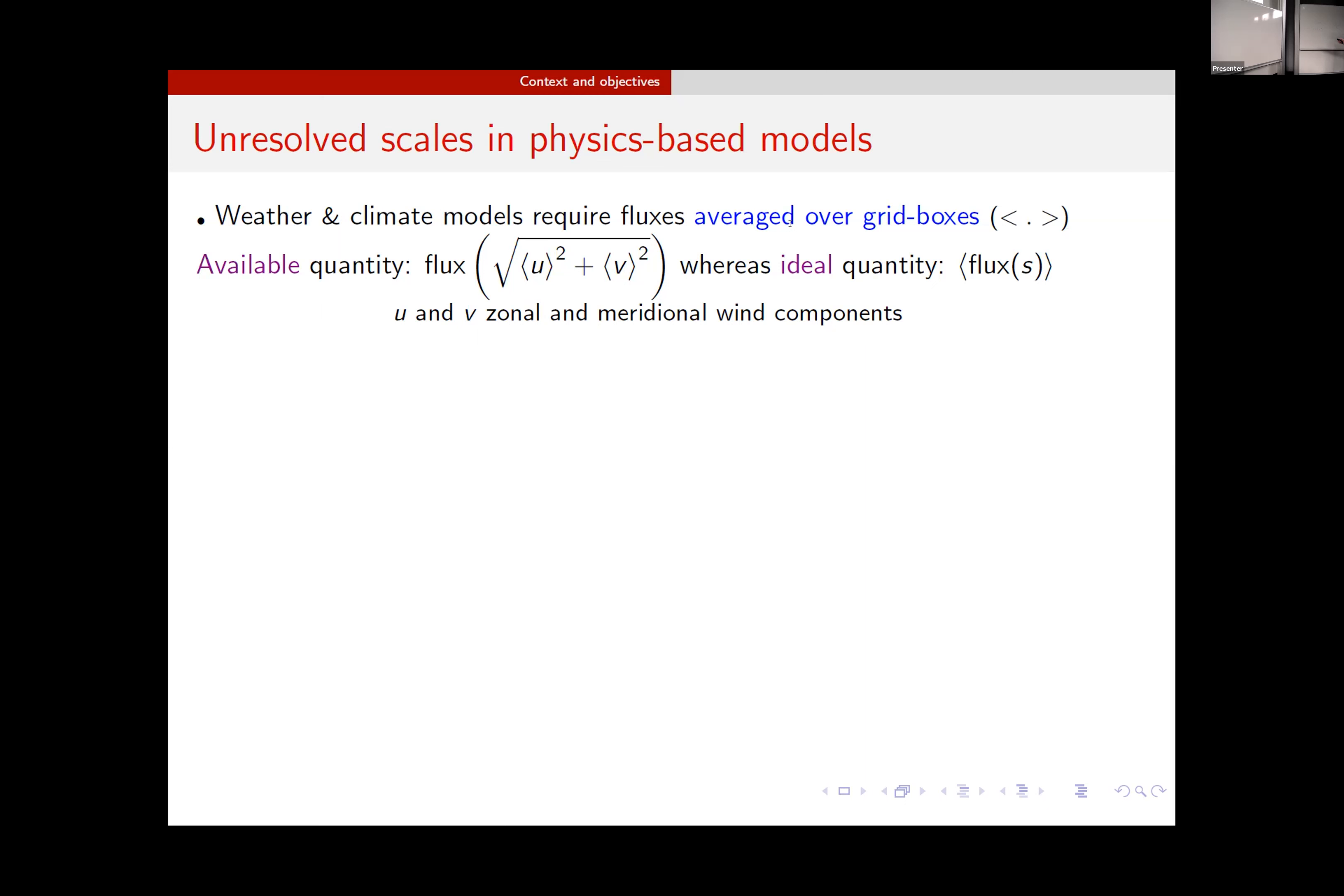In weather and climate models operating with grid boxes, these brackets are representing quantities that are available at the grid cell level. In reality, when we are going to compute those fluxes, we're going to use whatever we have resolved of the wind, meaning what we resolved of the zonal and meridional component of the wind, and then we calculate the flux with those quantities. But in an ideal life, one would like to compute the flux at a smaller scale if we were to have information about it, and then average these small scale flux over the at the level of the grid cell. Mainly what we're going to do here is model the discrepancy between these two terms.